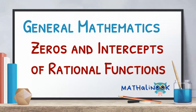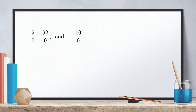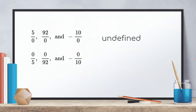Remember that in a rational function, we always have a restriction that the denominator should not be equal to zero, since division by zero is undefined. Therefore, 5 over 0, 92 over 0, and negative 10 over 0 are all undefined. On the other hand, if the numerator is zero, then the rational expression will be zero, like 0 over 5, 0 over 92, and 0 over 10.